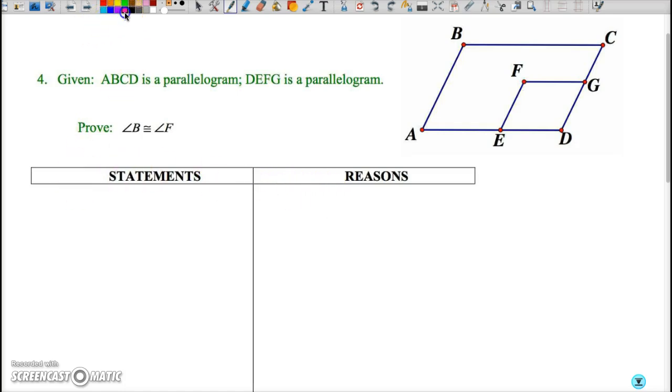So let me begin by doing that so that we have ABCD is a parallelogram, and so you can abbreviate that as PARM parallelogram, and DEFG is a parallelogram and both of those are of course given.